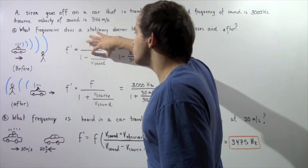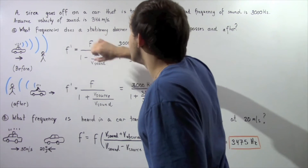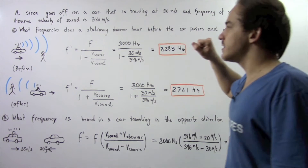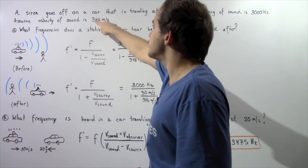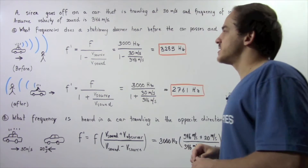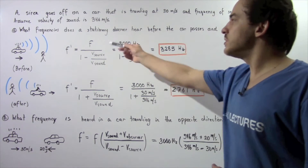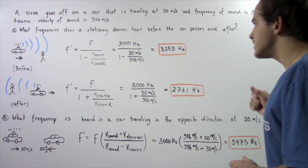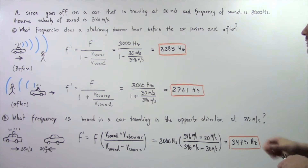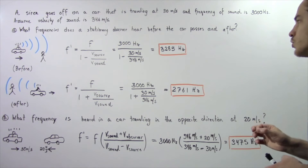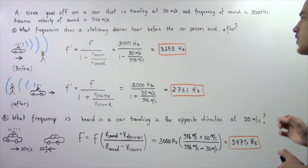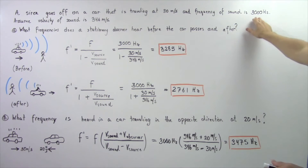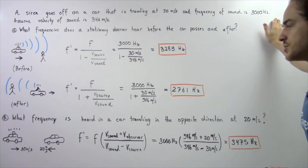The velocity of the source is 30 meters per second and the velocity of the sound wave is 346 meters per second. Plugging in our quantities, we get approximately a frequency of 3285 hertz, which is greater than the original 3000 hertz frequency.